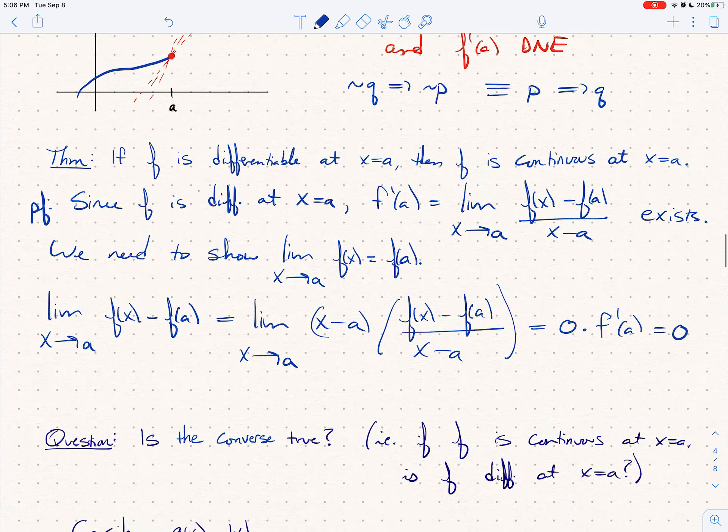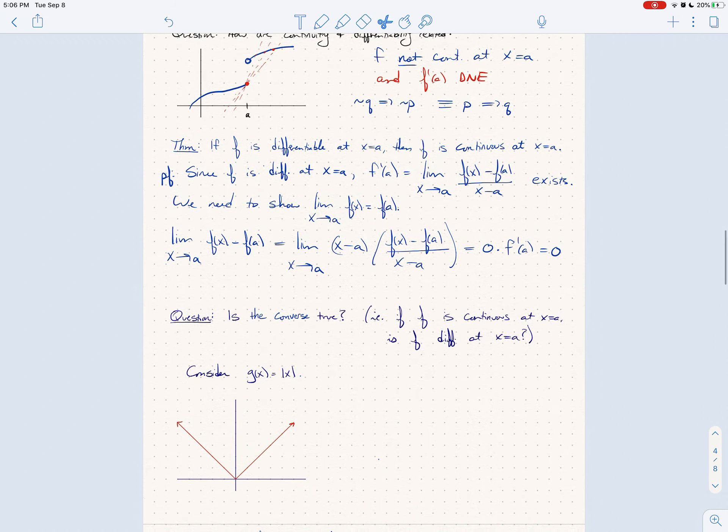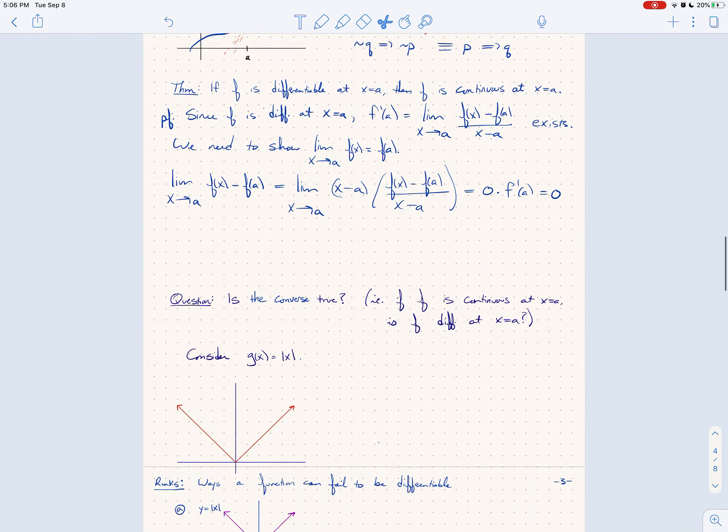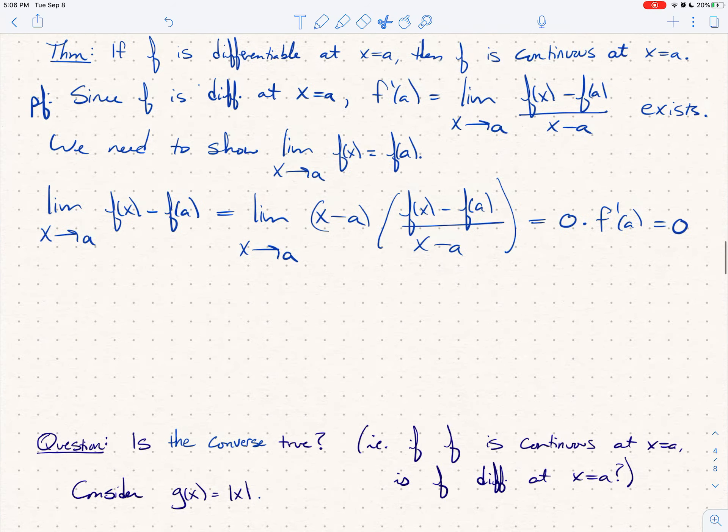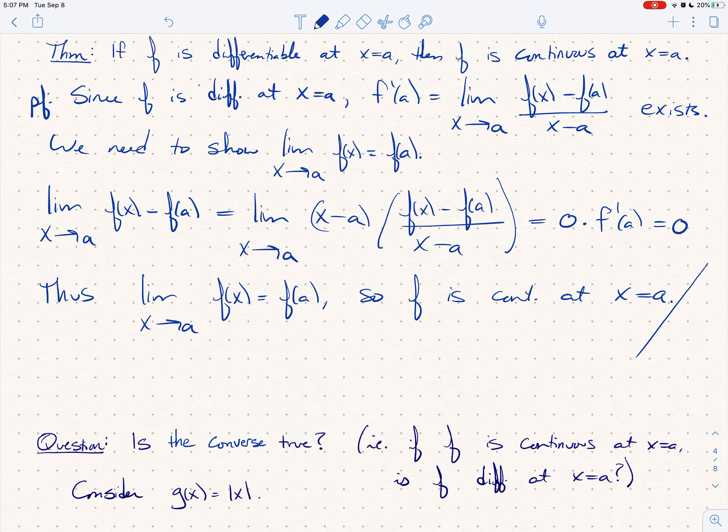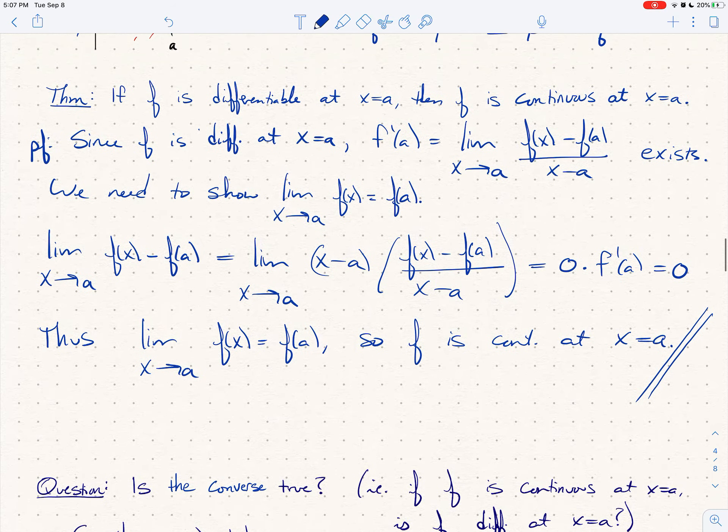And so I actually need to squeeze a little bit more room in here. I'm going to just slide this down. I'll fix it later after we end the video. And let me slide this down a little bit more. So now we can say, thus the limit as x goes to a of f of x is indeed f of a. So f is continuous at x equals a. And we've proven that so we can end the proof.